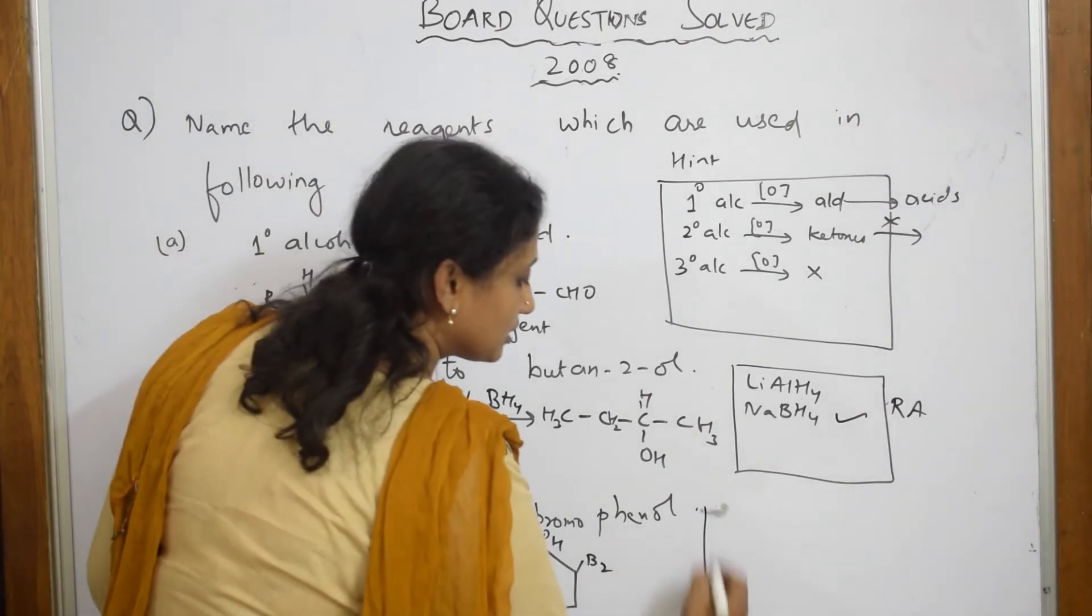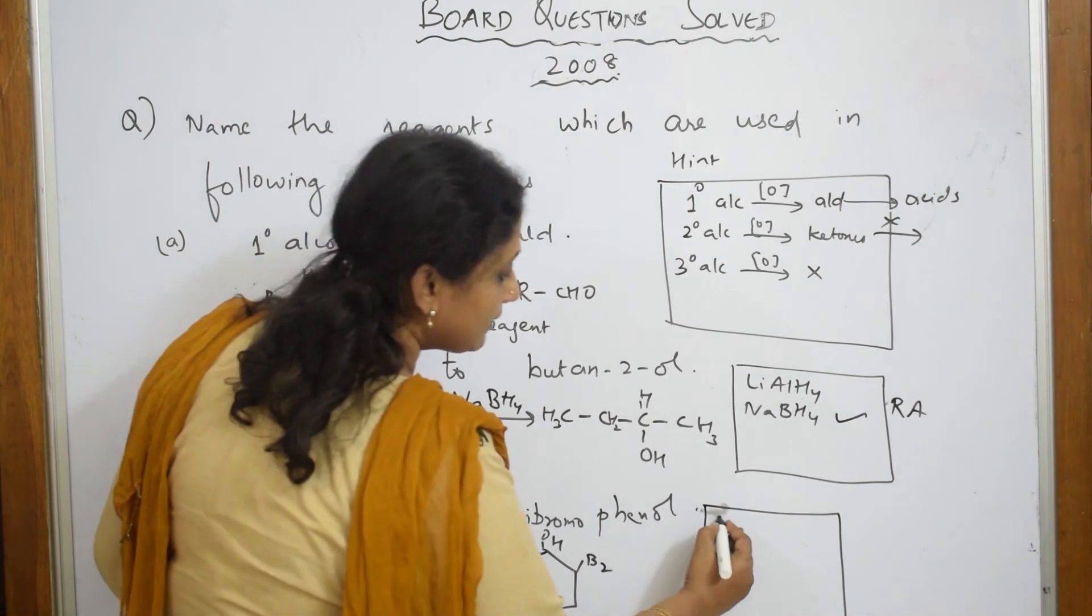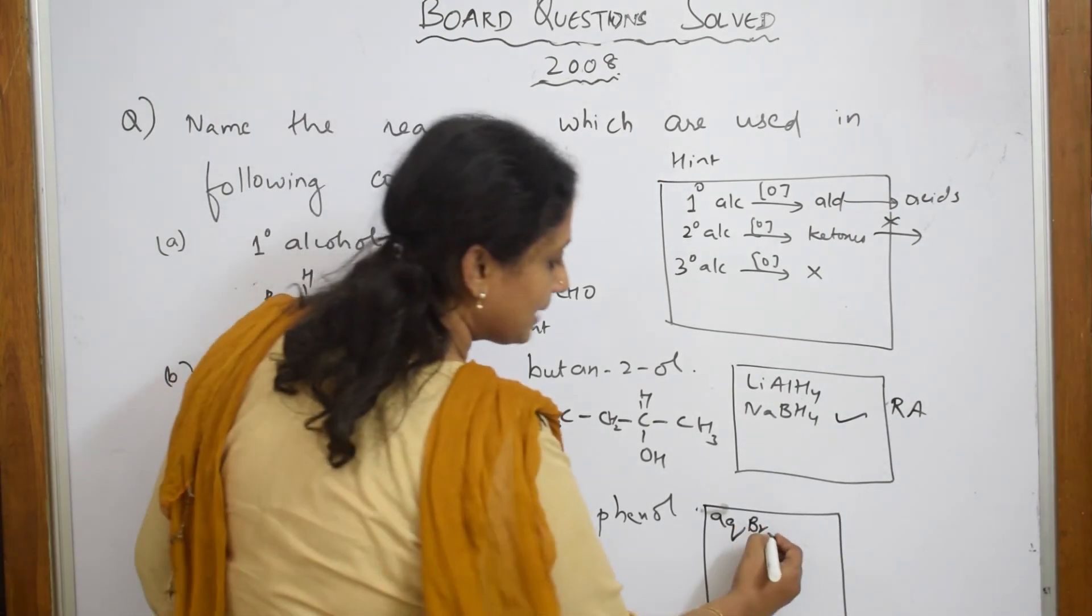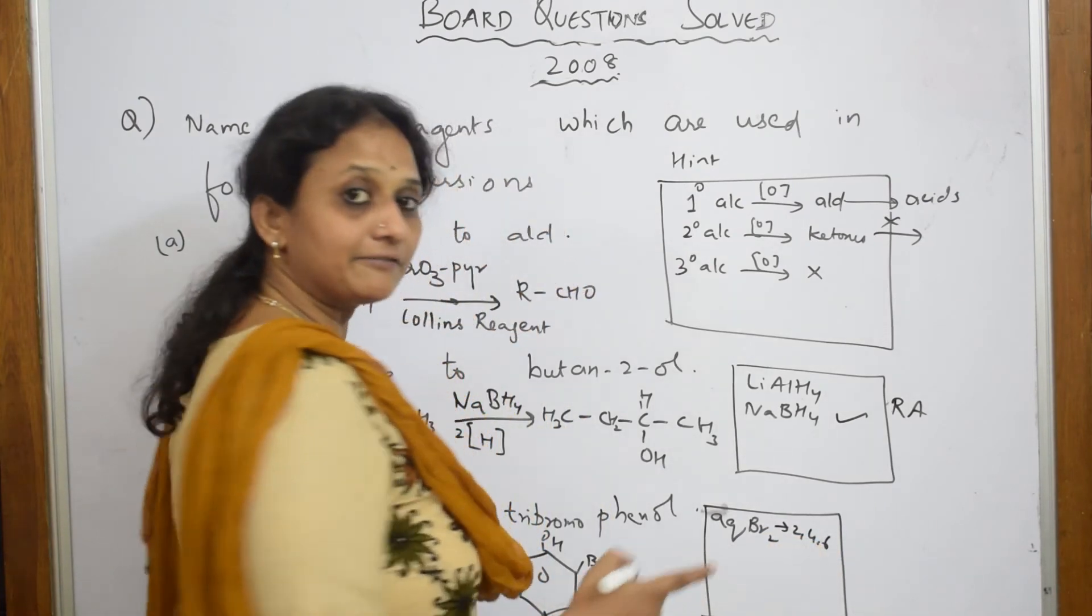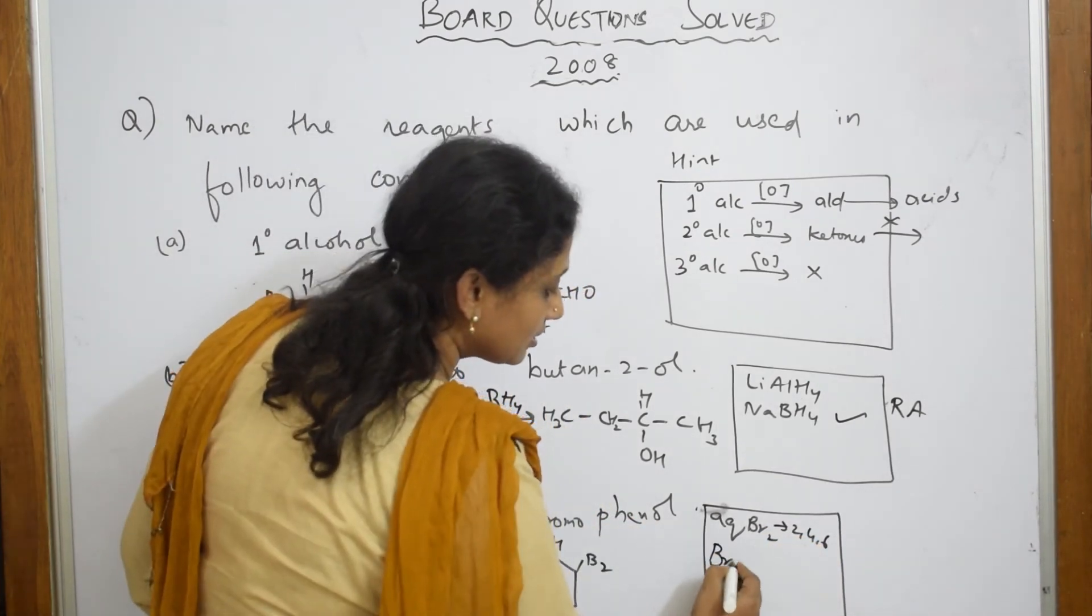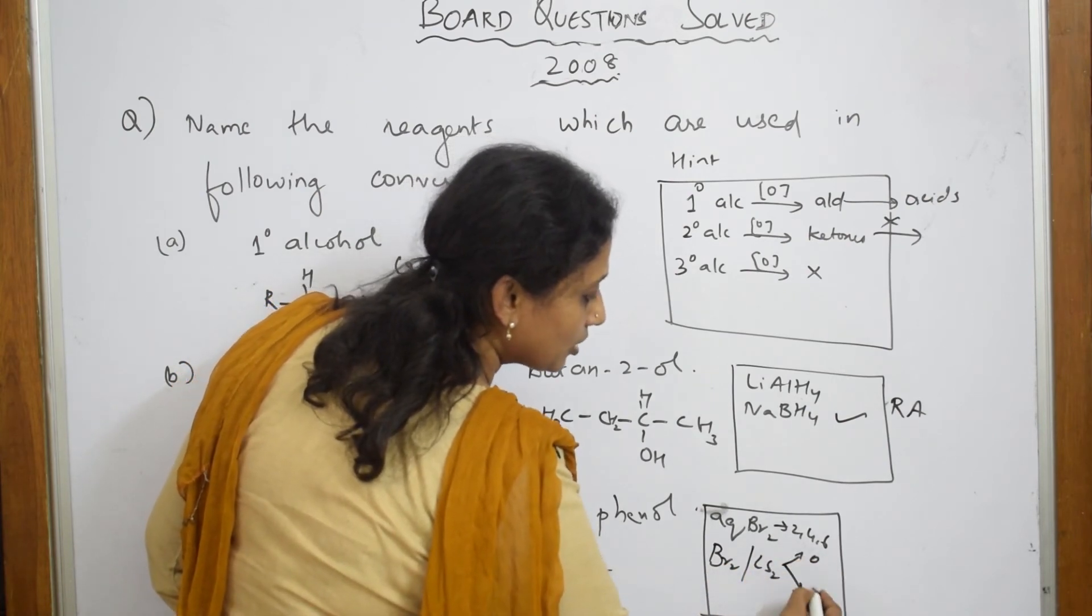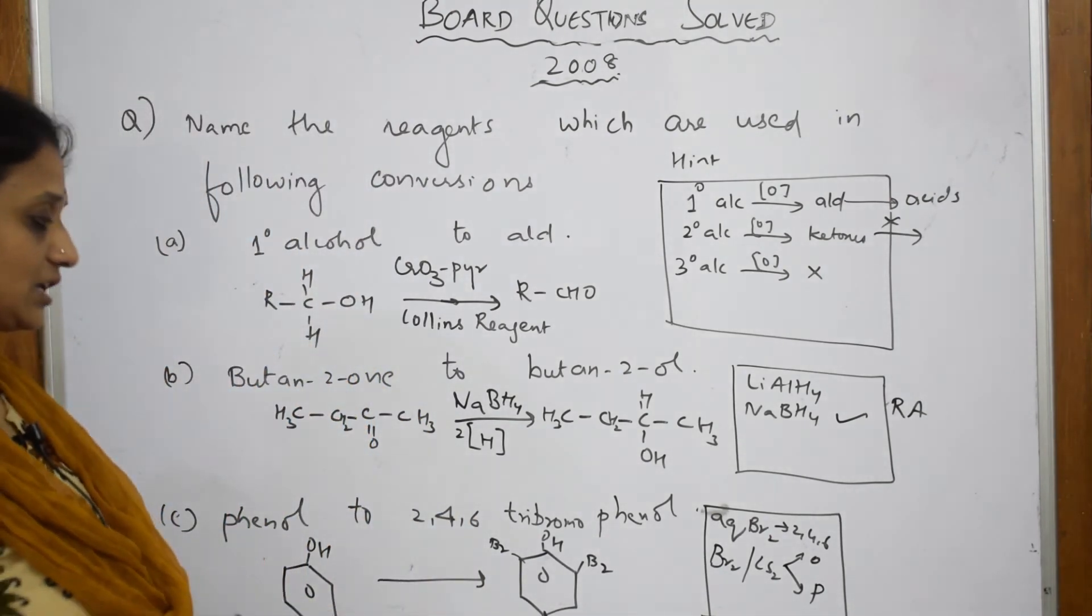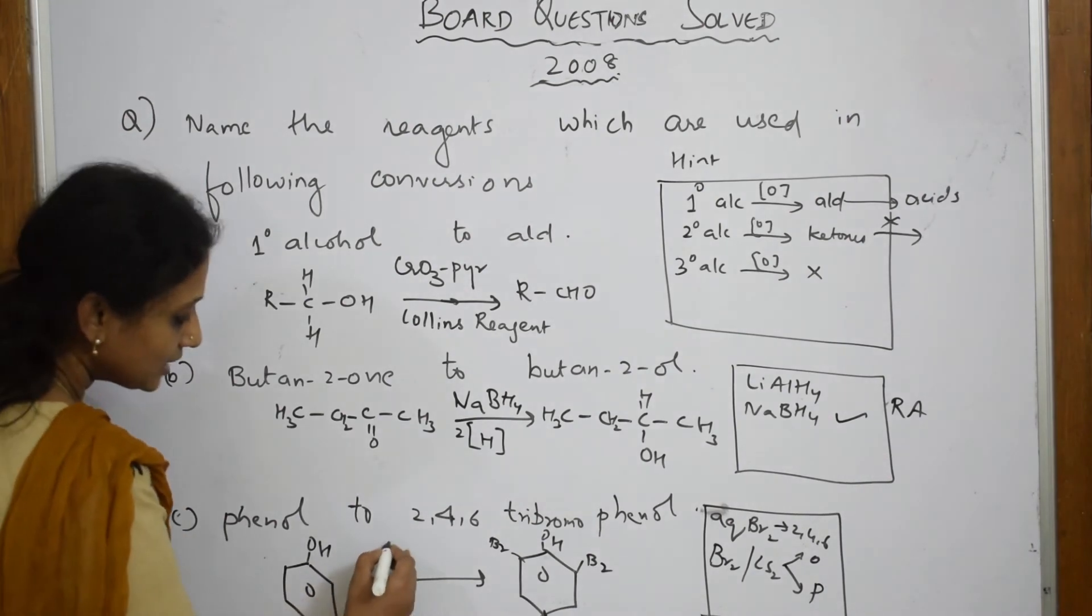I have to remember: whenever it is bromination, if I have my aqueous bromine or bromine water, I am going to get 2,4,6 products. If I have bromine in carbon disulfide, I get either ortho product as well as para product.